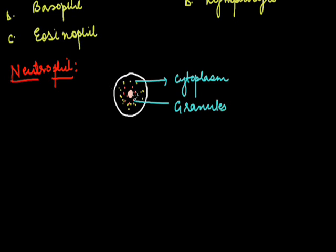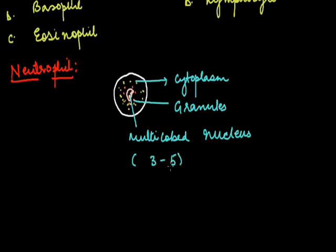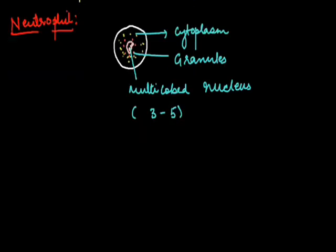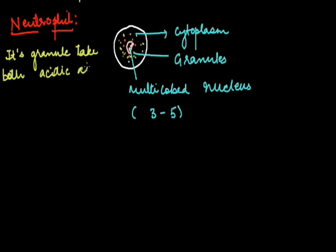Now if we talk about the nucleus of neutrophil, the nucleus is not exactly a rounded structure — it has many lobes. It is a multi-lobular structure with around three to five lobes of nucleus, giving the appearance that it has multiple nuclei, but actually the nucleus is only one. It is called neutrophil because its granules take both acidic as well as basic stain.